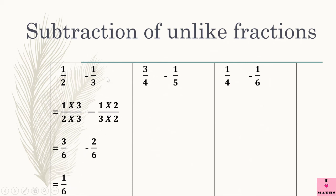This is exactly like we have done addition — the first two steps are exactly the same. Only in the last step, we have to do subtraction. Now let us go to: 3 upon 4 minus 1 upon 5. We have unlike fractions. Let us change them into like fractions.